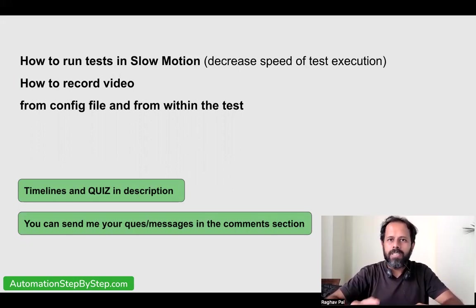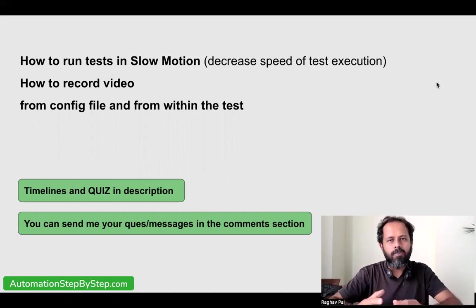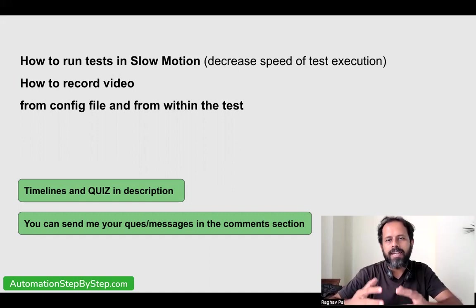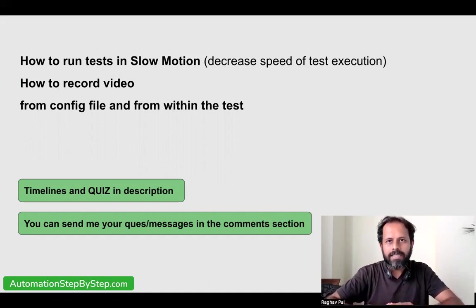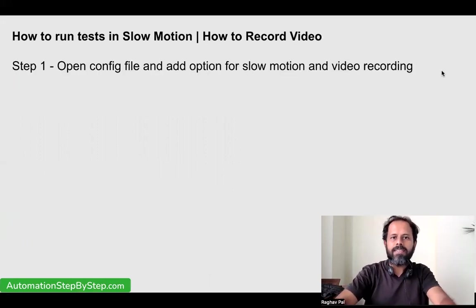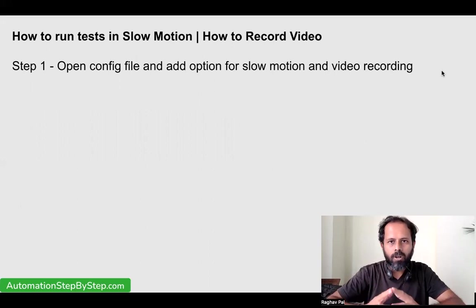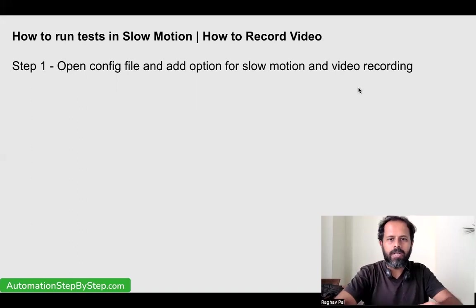All these features are built in within Playwright and we will see these options from the config file — how to set configurations at a global level — and we will also see how we can do this at a test level. So let's get started. The first step is we will go to our config file and add the configuration for slow motion and video recording.